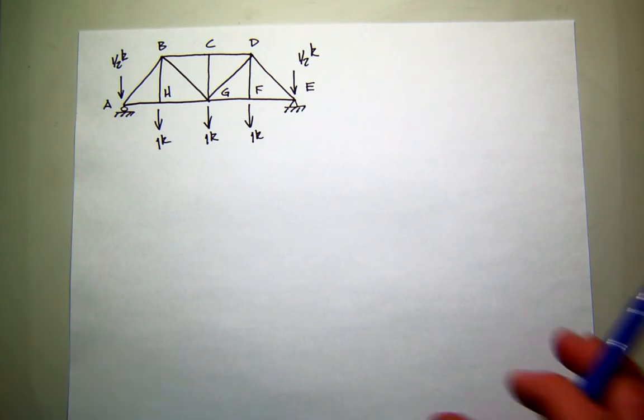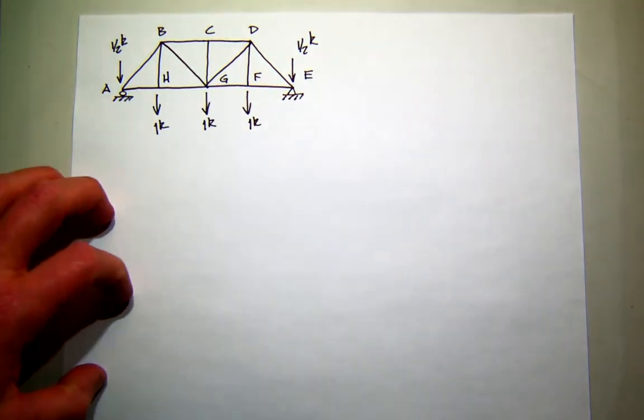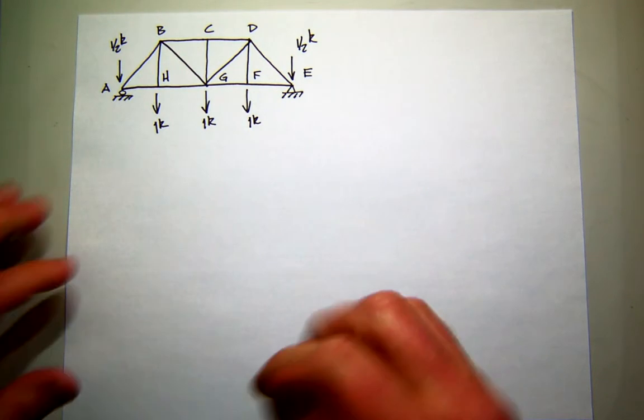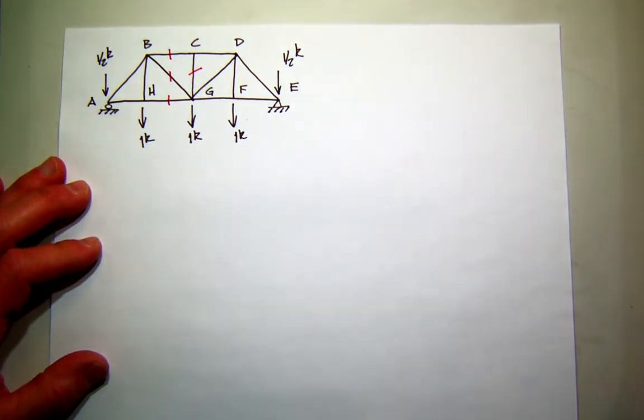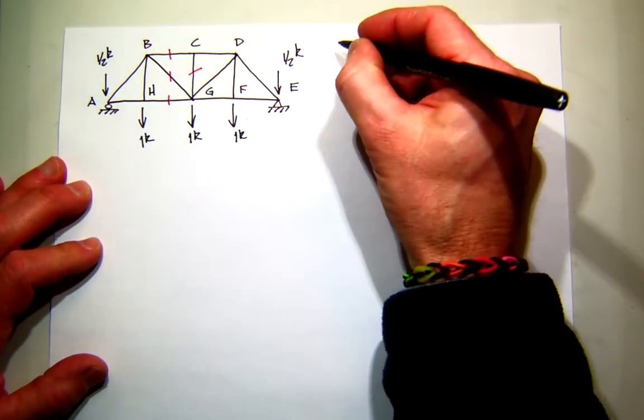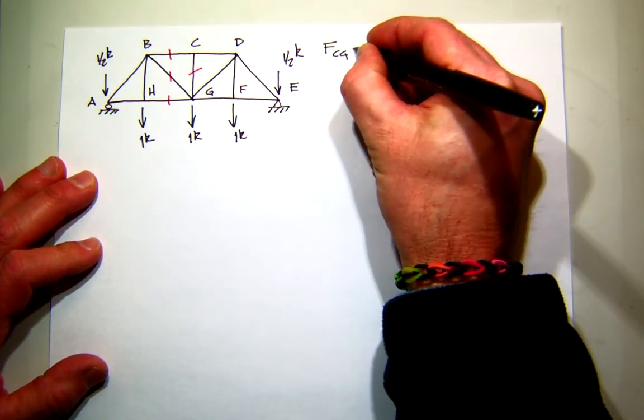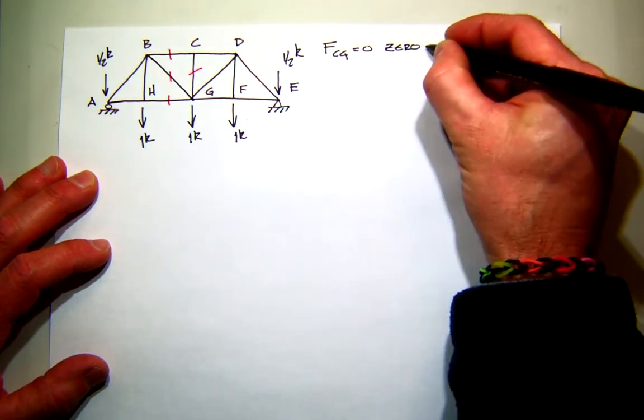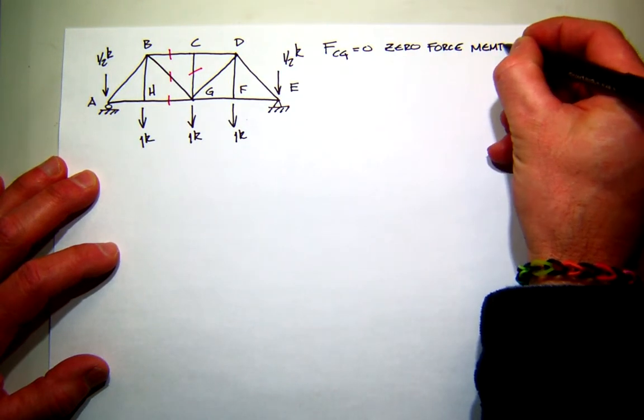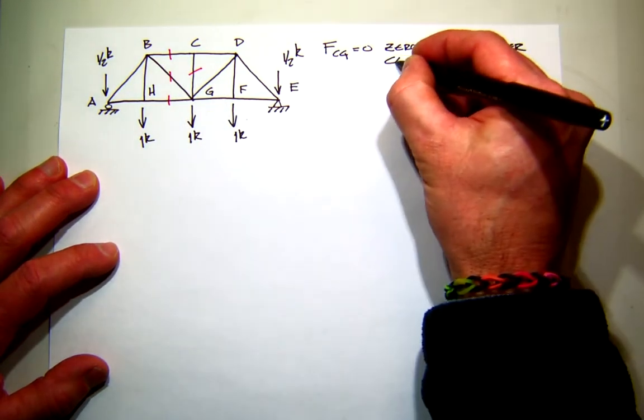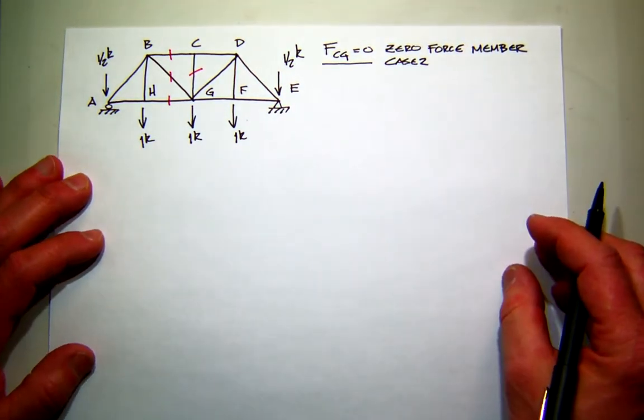Okay, the first thing I want to do is probably find my reactions. Let's think about this first. This particular problem wants to know these four bar forces, right? We've already discussed that part. And we already talked about two, but if you look carefully, you'll see that the force in CG is zero, and that's from a zero force member. And what case was that? Remember the two cases we talked about? That would be case two. So we have one of the four unknowns already.